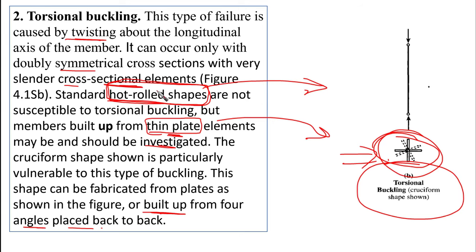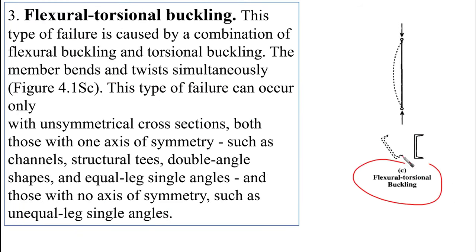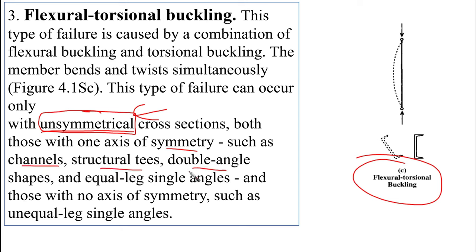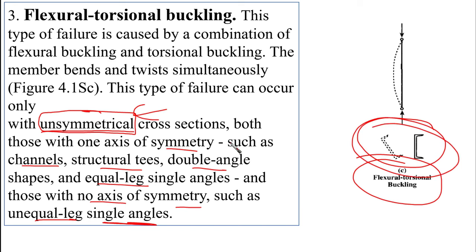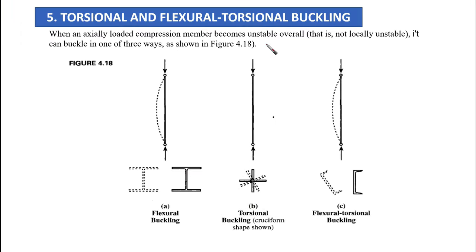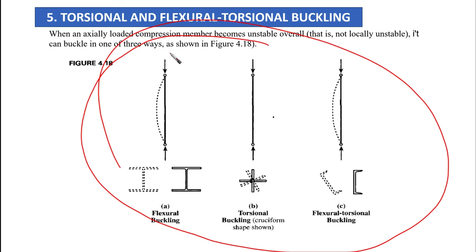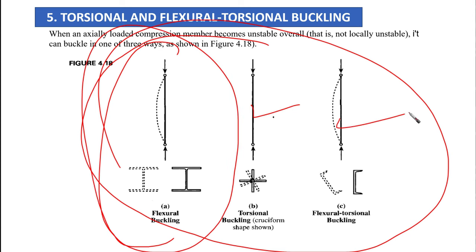Flexural torsional buckling is caused by a combination of bending and twisting simultaneously. This type can only occur with unsymmetrical cross sections — those with one axis of symmetry such as channels, structural T's, double angles, and equal-leg single angles, or those with no axis of symmetry such as unequal-leg single angles. This is not a common failure mode for standard structural members.